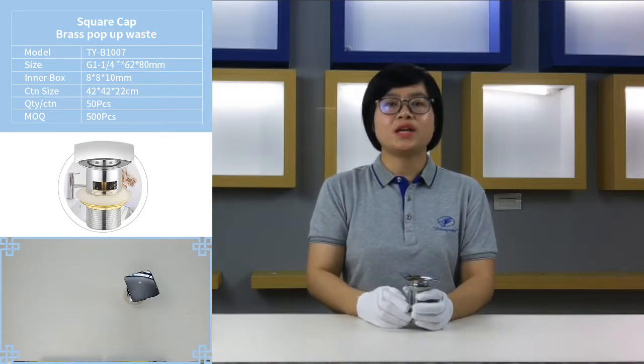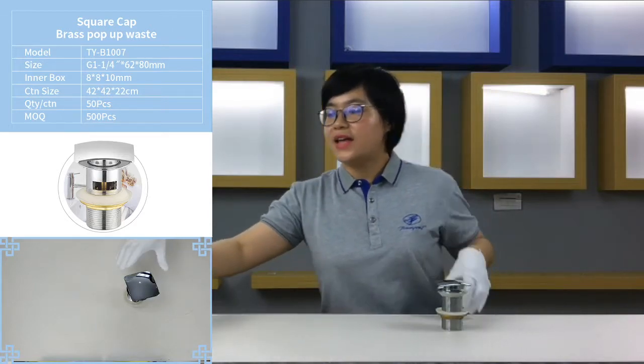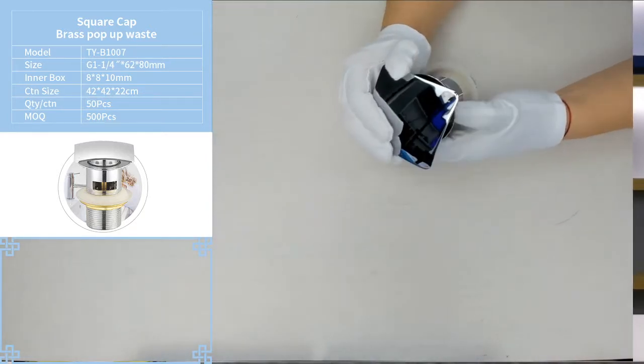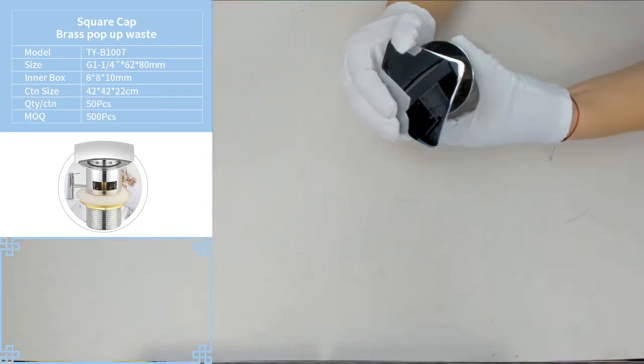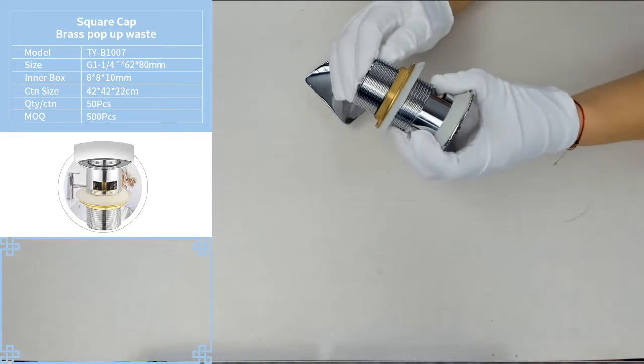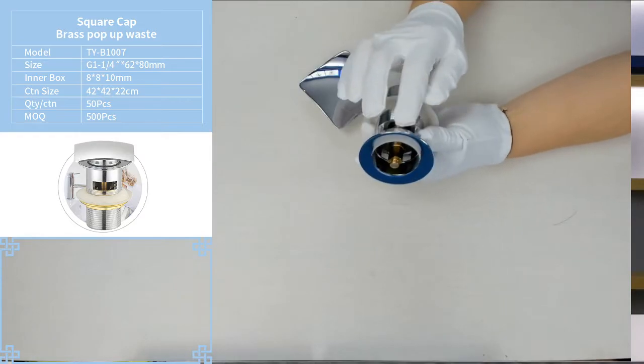Now we will introduce this product's specification. You can see for the cover, the size is 68 by 68 millimeter. For the flange it's 62 millimeter, you can see like here, and for the body, the height is 80 millimeter. Please make sure the body has an overflow on it.